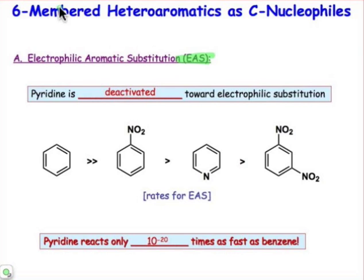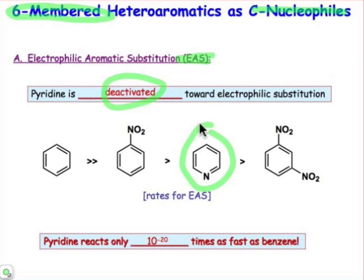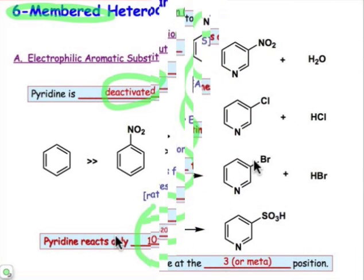That's the case for six-membered heteroaromatics in which the carbon atom or the π system is functioning as the nucleophilic source of electrons. In other words, pyridine is very much deactivated toward electrophilic aromatic substitution relative to benzene. Pyridine is intermediate in reactivity between nitrobenzene and dinitrobenzene, both of which are deactivated due to electron-withdrawing nitro groups. Compared to benzene, pyridine reacts only 1 × 10⁻²⁰ in relative rates — it's very slow relative to benzene.